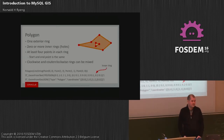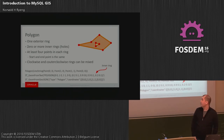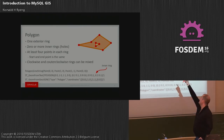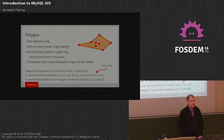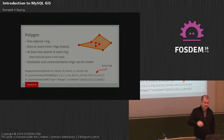Polygons have one exterior ring and may have zero or more holes, which are interior rings. There are at least four points — you have to specify that the starting point is the same as the end point, so a triangle has four points, just to close it off. You can specify this in a clockwise or counterclockwise direction; MySQL will flip it for you. Internally we use counterclockwise for the outer ring and clockwise for inner rings, so you may get a slight performance benefit if you do that as well.